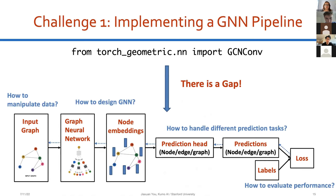The motivation for GraphGym is that implementing a full GNN pipeline is quite challenging. For example, while you can import a GCN layer from PyG, there is a gap between having that layer and building a full pipeline. There are many design choices: how to manipulate raw input data, how to design the GNN architecture, how to handle different prediction tasks at the node, edge, and graph level, and how to properly evaluate performance.